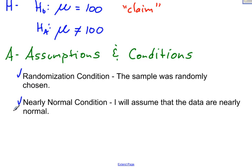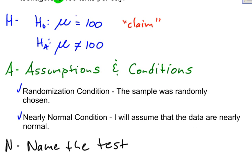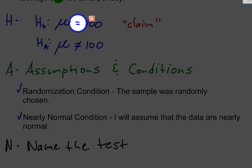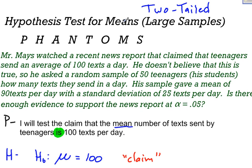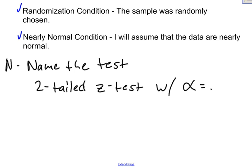The next step is N, which stands for name the test. Since I have an equal sign in my null hypothesis, that tells me this is a two-tailed test. And since I am conducting a test for means with a large sample, that tells me it is a z-test. So I name this a two-tailed z-test. Alpha is your level of significance, and I'm conducting a two-tailed z-test with alpha equals 0.05.